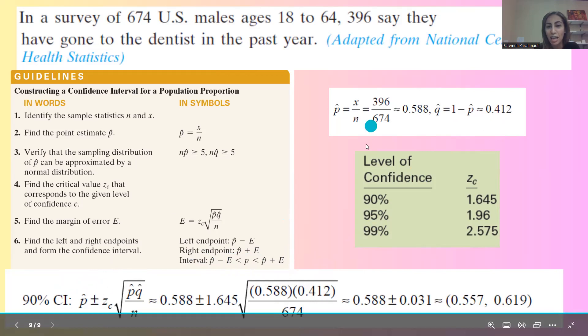p hat, as we calculated here, is 0.588 plus minus the margin of error, which is this number here. And after doing the calculation using your calculator, you get 0.031.